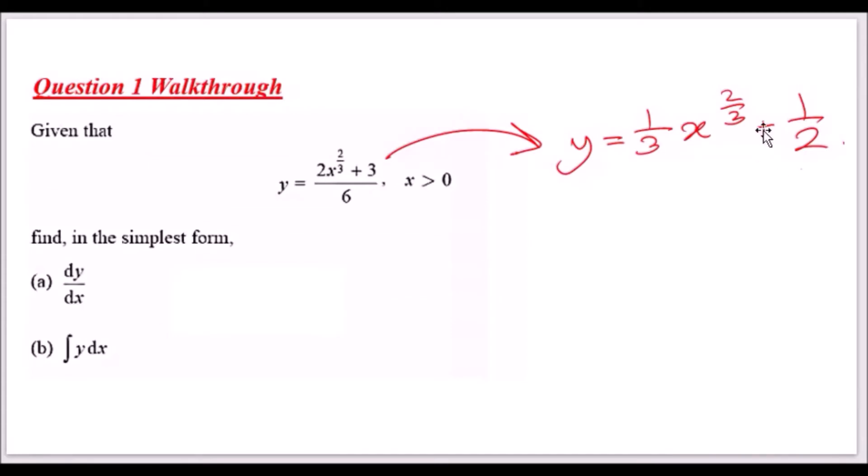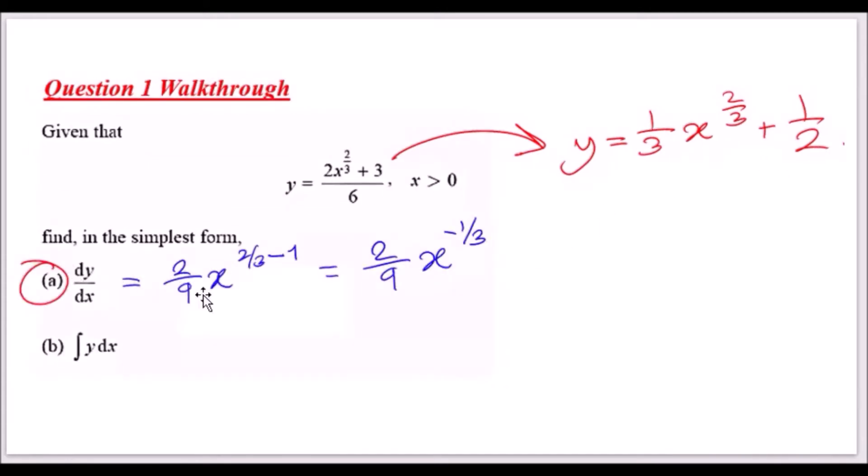Now to find dy/dx, it's just a case of following the steps. dy/dx simply tells us to drop the power 2/3 down, which gives us 2/3 times 1/3, which is 2/9, and then subtract the power by one, giving us a negative 1/3 exponent.